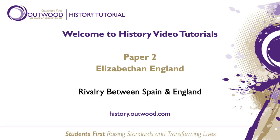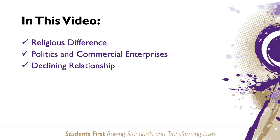Hello and welcome to this history tutorial on the rivalry between England and Spain. This is for Edexcel GCSE History Elizabethan England. Today we will cover the reasons why England and Spain were rivals, examining how religion, politics and commercial enterprise led to an increased rivalry between the two during Elizabeth's reign, and ultimately led to a decline in their relationship which led to the outbreak of war in 1585.